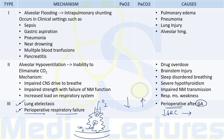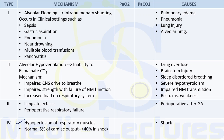Type 4 respiratory failure occurs due to hypoperfusion of the respiratory muscles in conditions like shock. Normally 5% of cardiac output goes to respiratory muscles, but this increases up to 40% in shock. PaO2 decreases and PaCO2 increases. Treatment is to intubate the patient and start mechanical ventilation to decrease the workload of respiratory muscles so blood can be redistributed to vital organs.